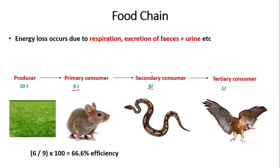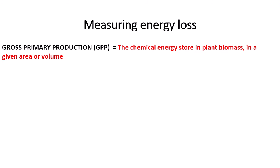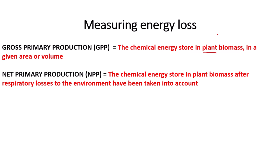There are many ways in which we can measure energy losses. For producers, we use what we call gross primary production, or GPP. The definition of gross primary production is the chemical energy store in plant biomass in a given area or volume. Then we can measure the net primary production, or NPP, which is the chemical energy store in plant biomass after respiratory losses to the environment have been taken into account.